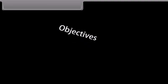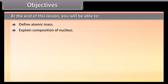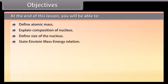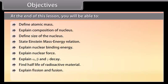Objectives. At the end of this lesson, you will be able to define atomic mass, explain composition of nucleus, define size of the nucleus, state Einstein mass-energy relation, explain nuclear binding energy, explain nuclear force, explain alpha, beta and gamma decay, find half-life of radioactive material, explain fission and fusion, and explain the nuclear reactor.